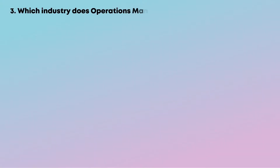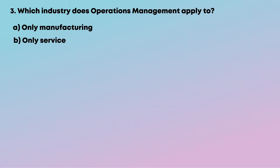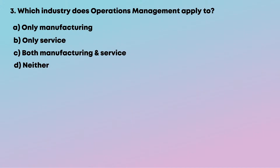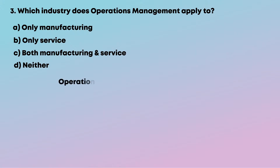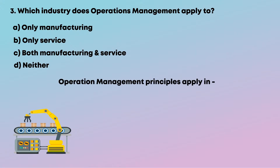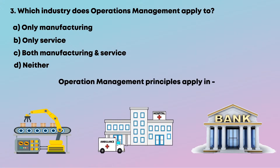Question 3: Which industry does operations management apply to? Options are: A, only manufacturing; B, only service; C, both manufacturing and service; D, neither. Operations management principles apply in factories, hospitals, banks, etc. The answer is C, both manufacturing and service.